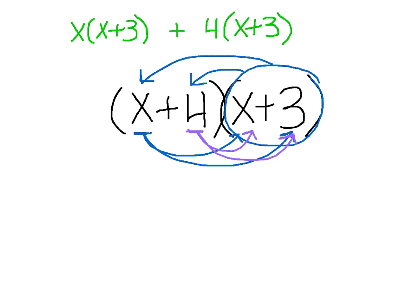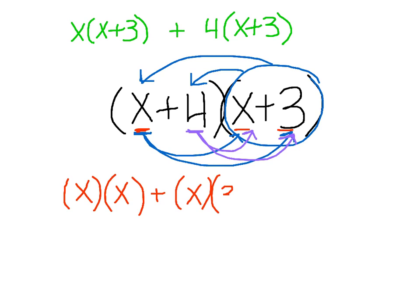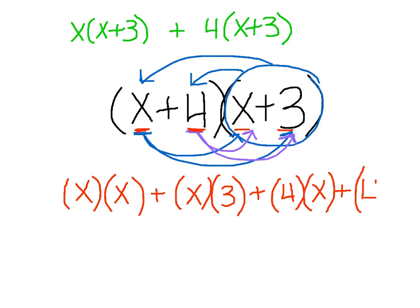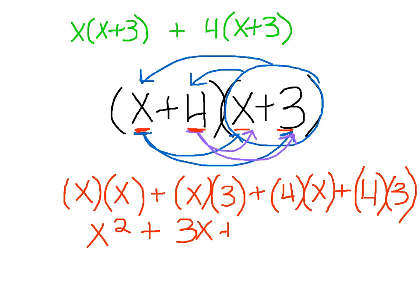So we have x times x — the first outside term times each term of the second binomial — plus x times 3. Then doing the same thing with my second term, 4: so 4 times x plus 4 times 3. Once we've done that, we're going to simplify.